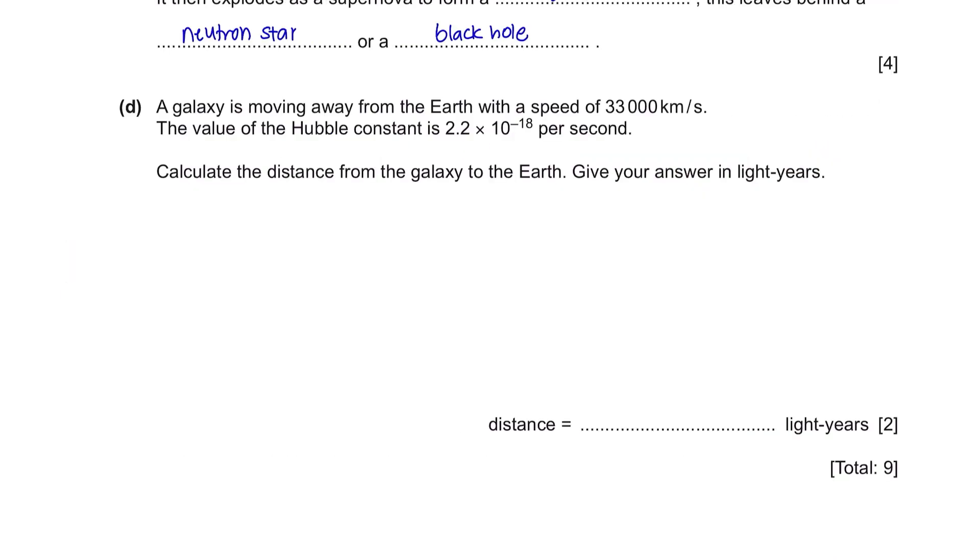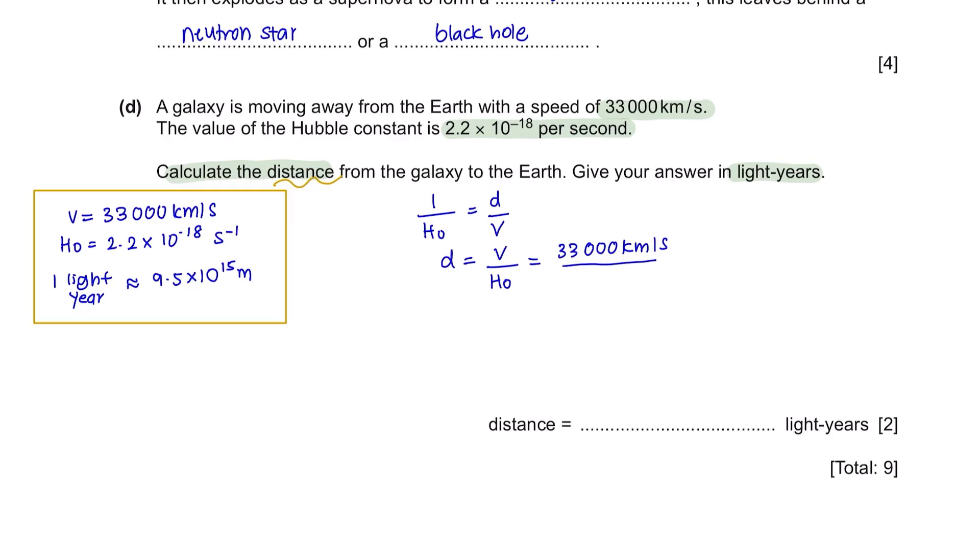Question D: A galaxy is moving away from Earth with a speed of 33,000 kilometers per second. The value of Hubble constant is 2.2 times 10 to the power of negative 18 per second. Calculate the distance from the galaxy to the Earth. Give your answer in light years. Let's list down all the known quantities given in this question. The Hubble law formula can be written as 1 over H naught equals distance over velocity. We are looking for the distance here, so rearrange it and we will get distance equals velocity divided by Hubble constant. The velocity is 33,000 kilometers per second. And Hubble constant is 2.2 times 10 to the power of negative 18 per second. You must remember this formula and the value of Hubble constant. This will now give us a value of distance at 1.5 times 10 to the power of 22. Unit is kilometers.